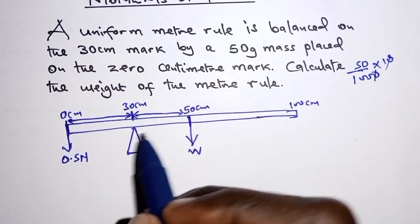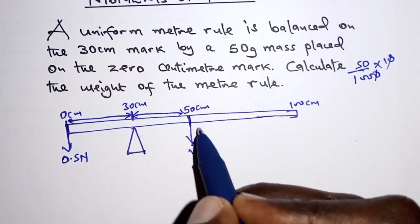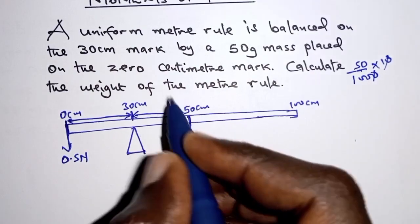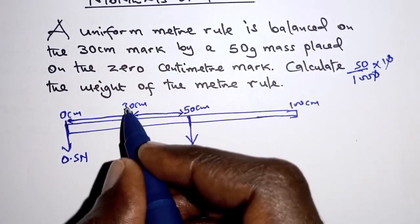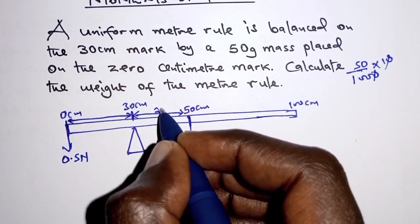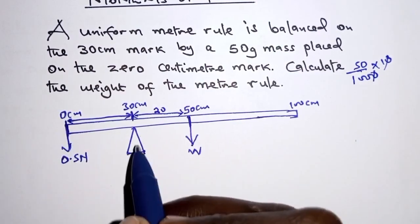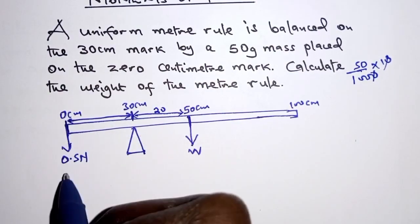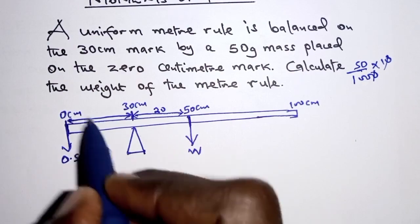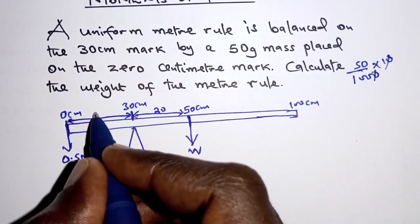So the distance between the pivot up to the point of application of the weight is 50 minus 30, and that is 20. And between the pivot and the line of action of 0.5 newtons, this distance here is 30.